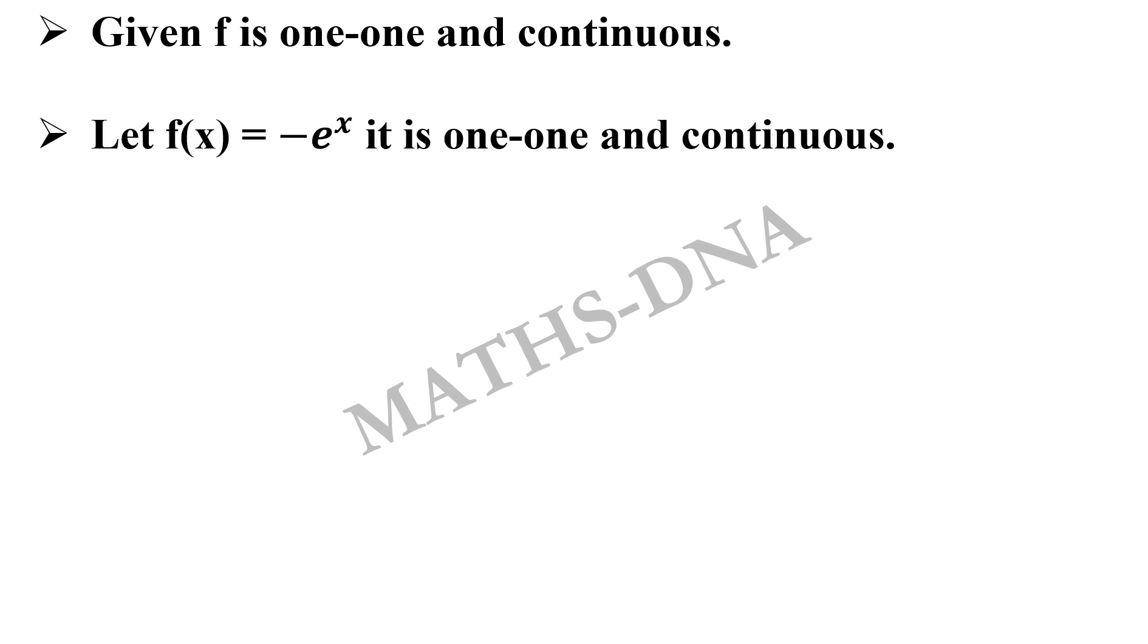Moving on to option B... okay firstly let us take option C because with the same example we will be eliminating option C as well. It is given that f is one-one and continuous and we are again considering the same function f(x) equals to -e^x. Here we cannot find any x belongs to R such that f(x) equals 1.